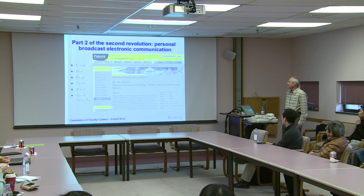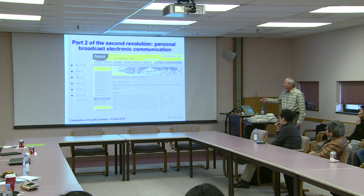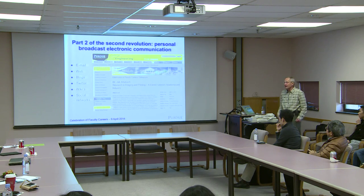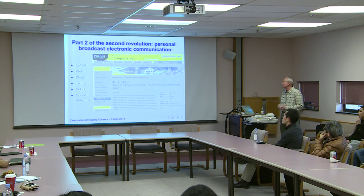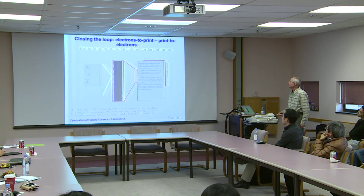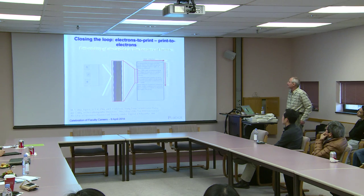Then the revolution moved from personal broadcast print communication to electronic. In my lifetime these are all relatively recent: email, web, blogs, Twitter, wiki, social networks — including a website announcing the very seminar I'm giving right now. We've gone from an individual being able to create a printed document and distribute it widely, to having an individual broadcast information electronically. There's also an important current research area around closing the loop: going from electrons to print, then scanning the print and extracting invisible metadata embedded in it — like a QR code that you don't notice is there.